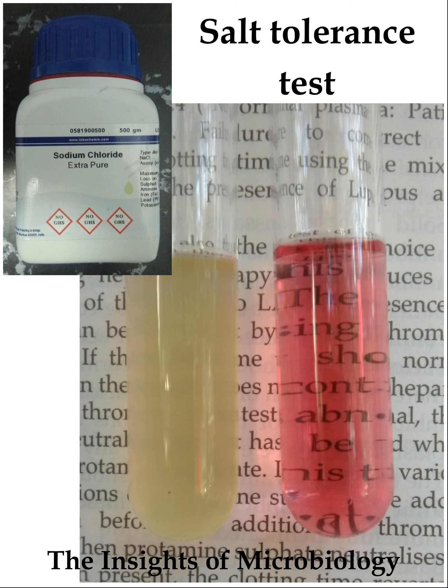Take two colonies of the test isolate from a fresh culture, grown between 18 to 24 hours, and inoculate into the salt broth. The inoculated tubes or vials should be incubated in ambient air between 35 to 37 degrees Celsius for 24 to 72 hours.